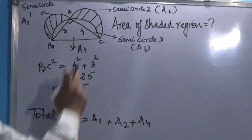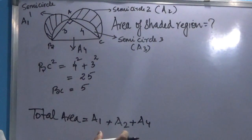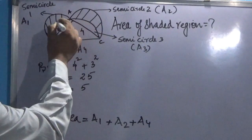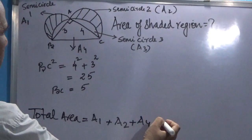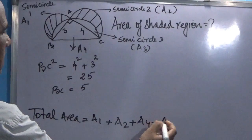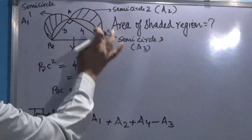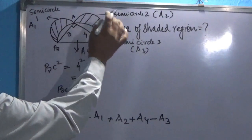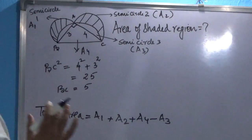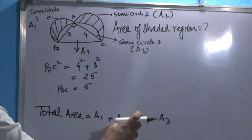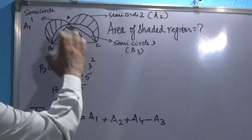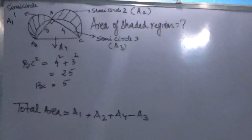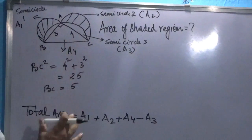Now what we need to do is find the shaded region. For that, we take this total area and subtract the bigger semicircle area A3. Subtracting A3 from the total will automatically leave us with only the shaded region area. If this point is clear, then this question is not at all difficult — in fact, the calculation part is also quite easy.